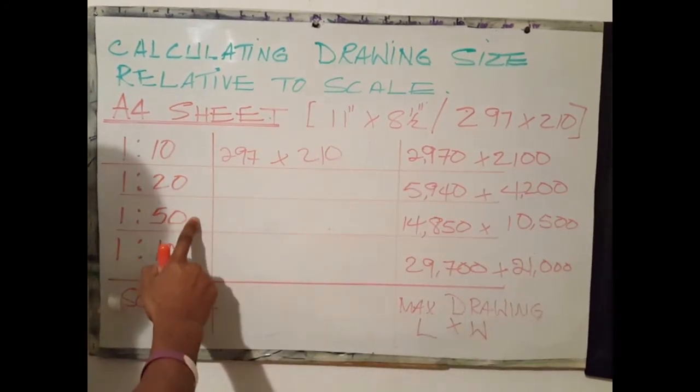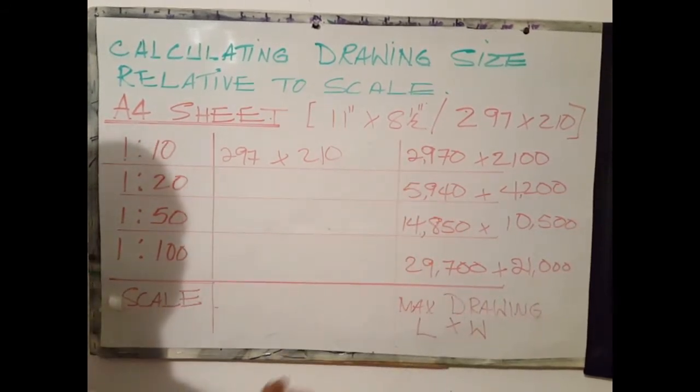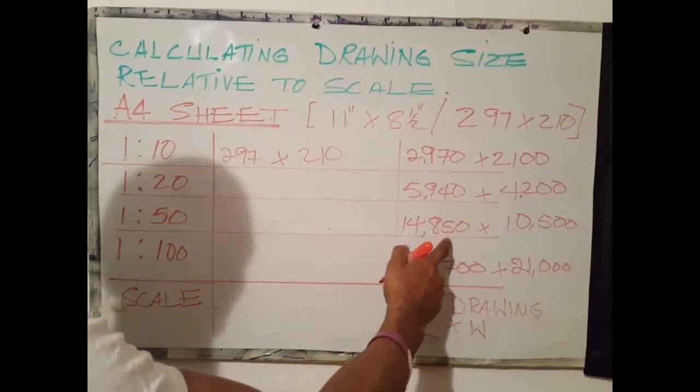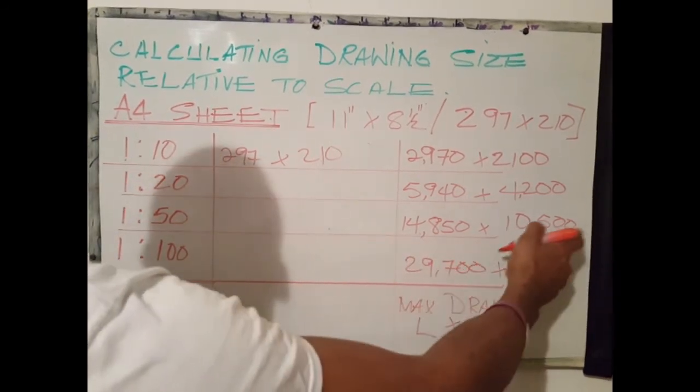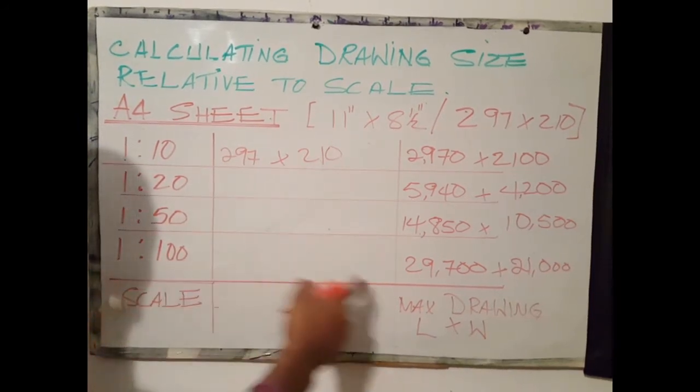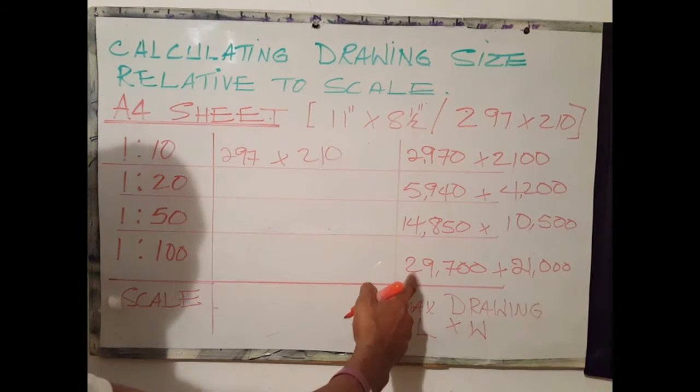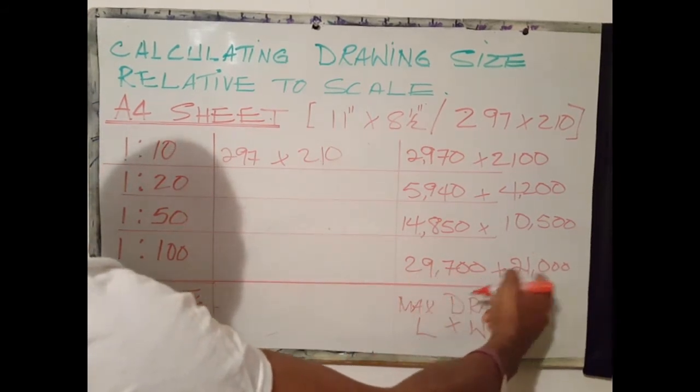For a 1 to 50 scale, the maximum size drawing that can fit onto that sheet of paper is 14,850 by 10,500. For a 1 to 100 scale, the maximum size drawing that can fit is 29,700 by 21,100.